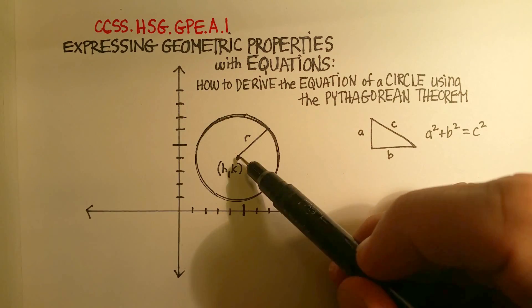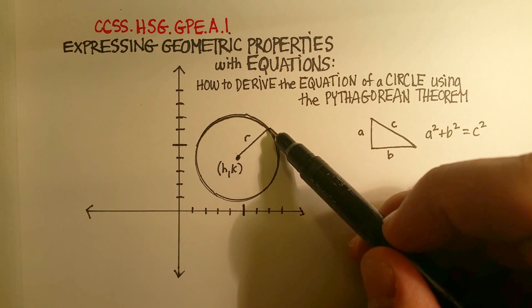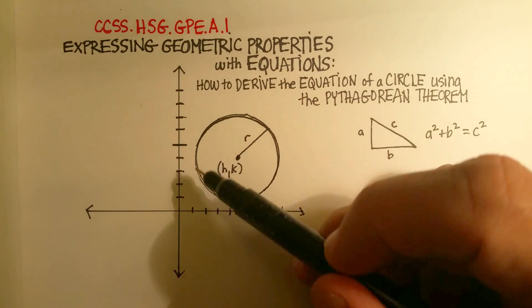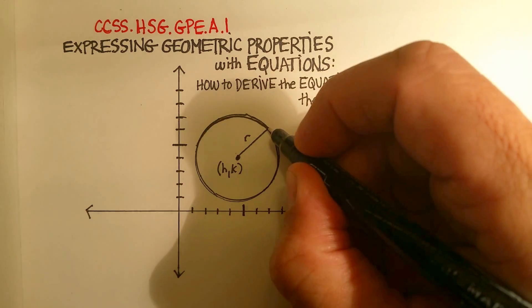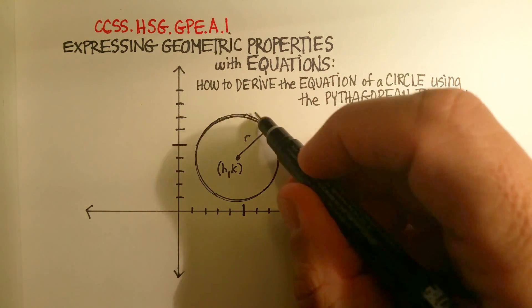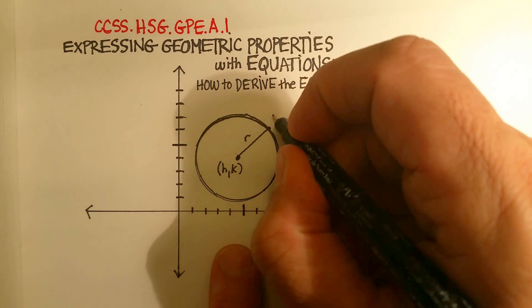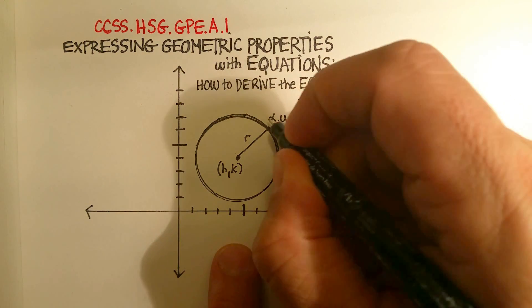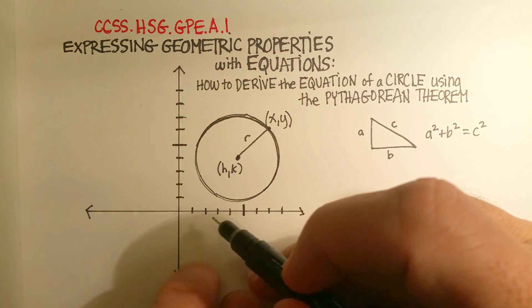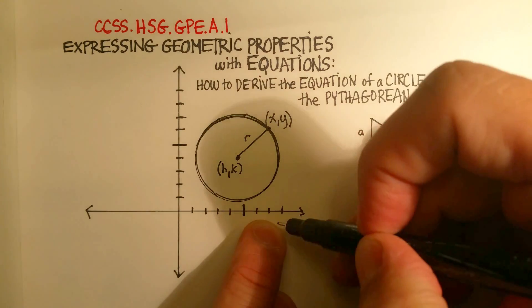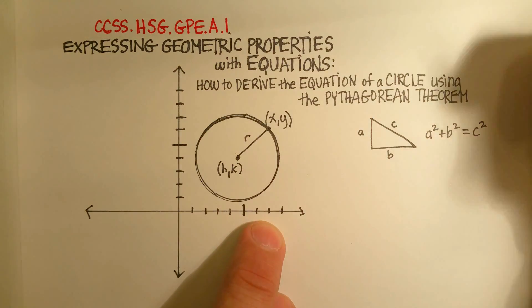Here's the radius going from the center point to some point along the edge of the circle. We're going to call this point on the edge any arbitrary x and y, because there's an x value here and a y value here.